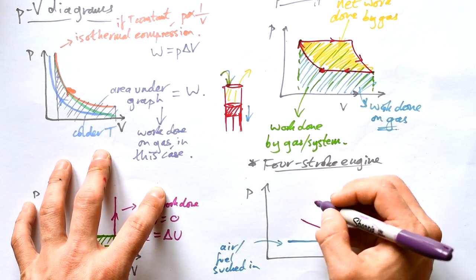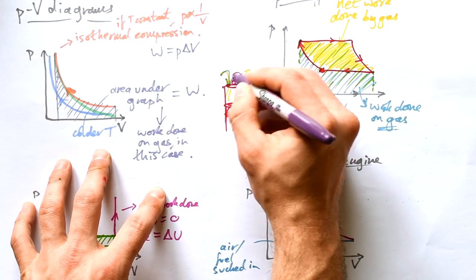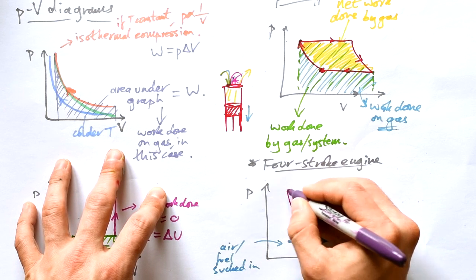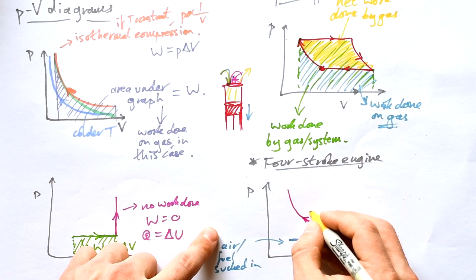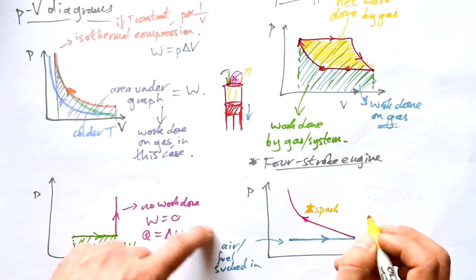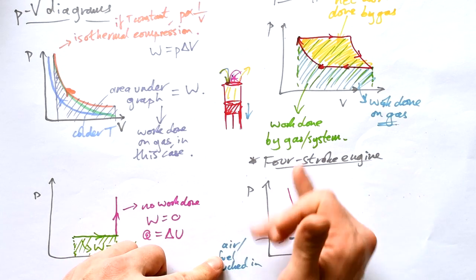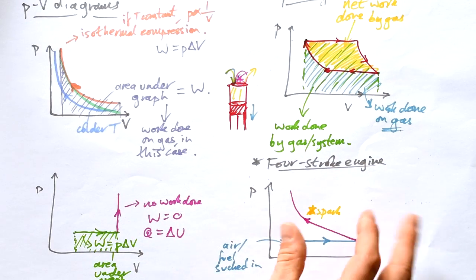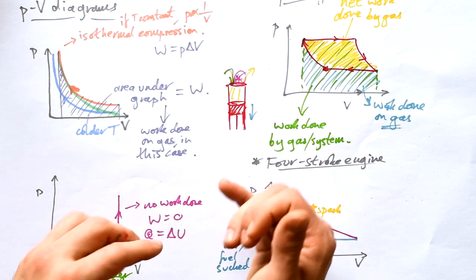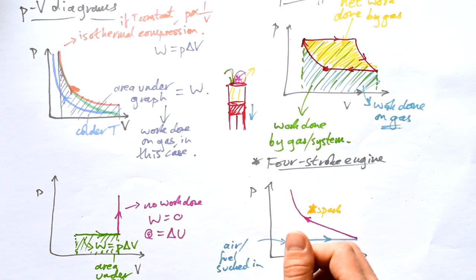Then what happens is that the piston is then pushed back upwards to compress the air and the fuel. And then halfway up, we have a spark. That's why we need spark plugs. And it causes combustion to happen. And usually the spark happens about here. Let me see that sort of dogleg going on there because the pressure is increasing very rapidly. Of course, it can't stay like that because if the pressure is too great and the piston is allowed to move, the piston is going to come back down again.